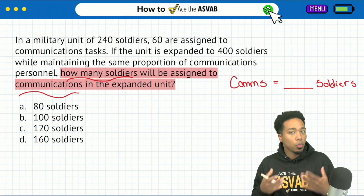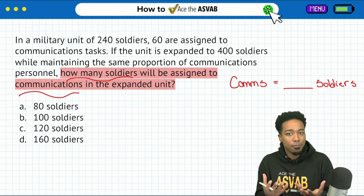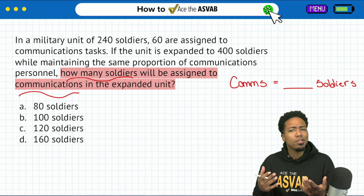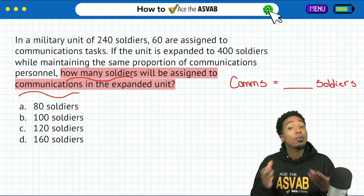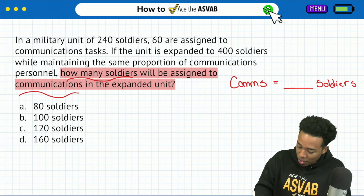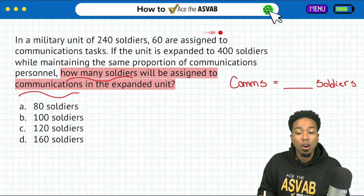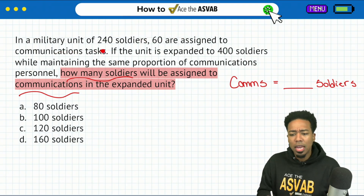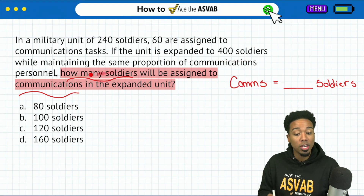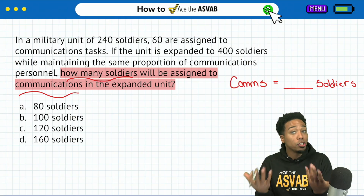Up next, what are we going to do? Remember: first step, what do we want? Second step, what do we have? What information do we have that's connected to the number of soldiers assigned to communications? We're going to check the problem now. It says in a military unit of 240 soldiers, 60 are assigned to communications tasks. If the unit is expanded to 400 soldiers while maintaining the same proportion of communications personnel, how many of them are in communications? That's what gives it away that we're dealing with a ratio or proportion problem.